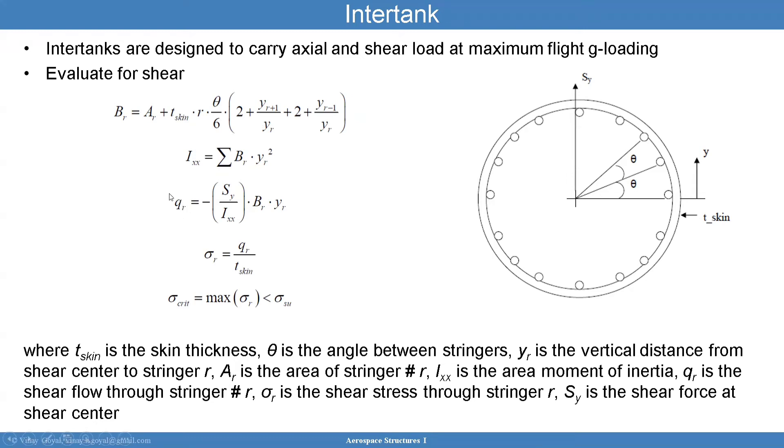YR is known for every stringer so you can calculate the inertia by adding all this from R equals 1 to N. If I have 10 stringers that will go there. Then you will find the shear flow for a particular stringer. That's the total shear force SY divided by the moment of inertia which is driven by all the stringers. You know BR for every stringer because you have this calculation. You have YR for every stringer because you have the height of that stringer. So you can calculate QR. QR divided by the skin thickness gives you the shear stress on every stringer. Now that you have the shear stress on every stringer you can calculate the one that's the highest.